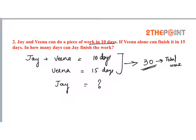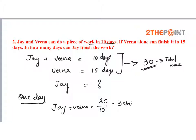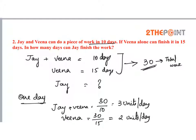Find the work done in one day by Jay and Veena together. Work done in one day by both Jay and Veena is 30 by 10, that is 3 units of work per day. And work done only by Veena in one day is 30 by 15, which equals 2 units of work per day. We know work done by Veena in one day is 2 units and work done by both Jay and Veena is 3 units per day.